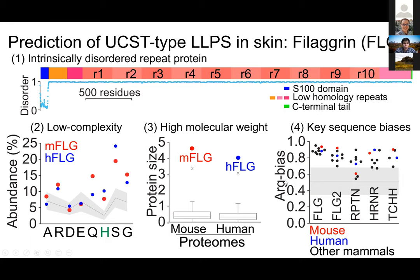This was not only true for filaggrin across different species, but also for related proteins — filaggrin-2, RPTN, hornerin, and trichohyalin — proteins in the same genomic locus as filaggrin, closely related in function. Not only is filaggrin fulfilling the conditions for being a UCST type, but other proteins in the skin appear to be built similarly. This really got us thinking that this could be a really interesting system for uncovering a potential role for phase separation in a mammalian tissue.